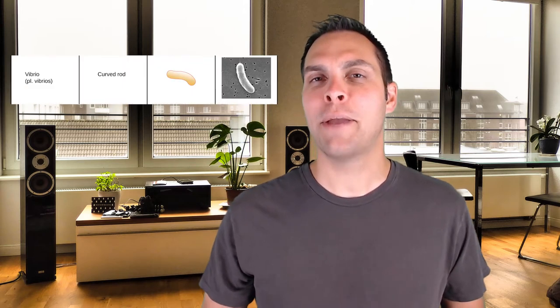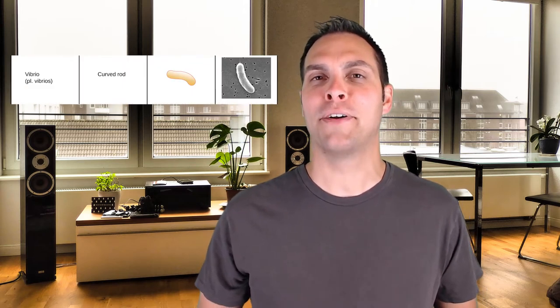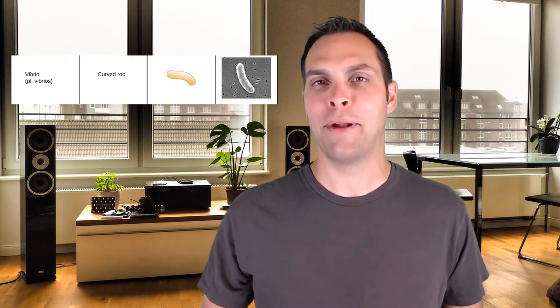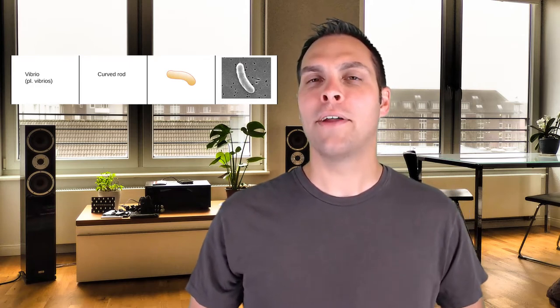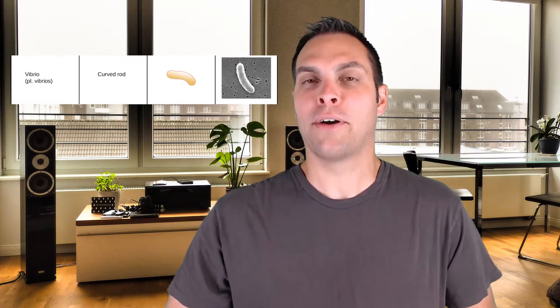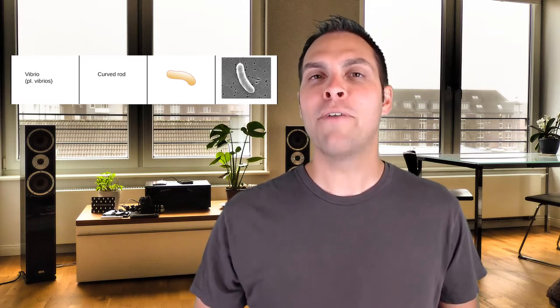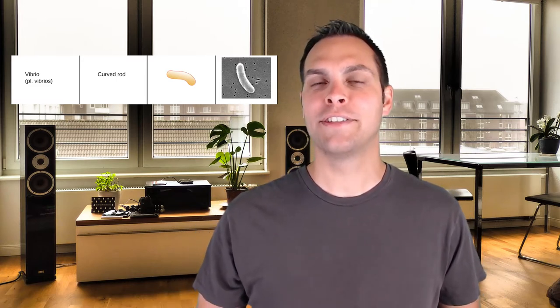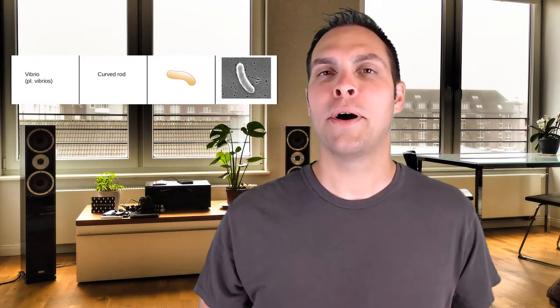The next shape is what we call the vibrio. Vibrio are comma-shaped — almost like somebody took a rod bacterium and bent it in the middle. They are gram-negative in nature. Now if we take a rod and twist it slightly, this leads to something called a spiral, or spirillum (plural: spirilla). Spirals are also gram-negative — it's almost as if you take a gram-negative rod and twist it on itself, giving it this sort of squiggly shape.